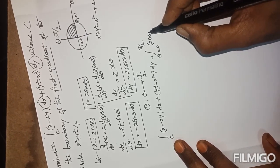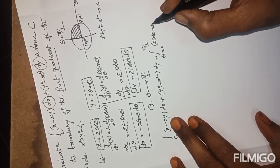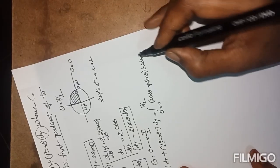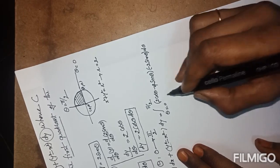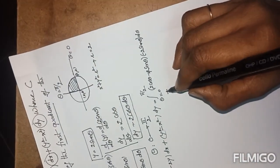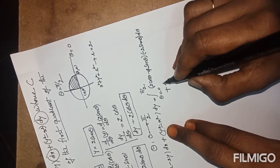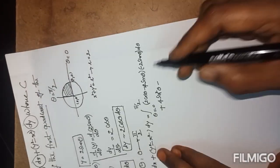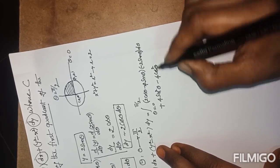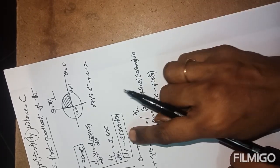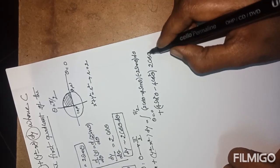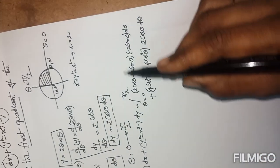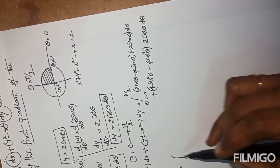Substituting: x is 2 cos theta, 2y is 4 sin theta, dx is minus 2 sin theta dθ; y² is 4 sin² theta, x² is 4 cos² theta, dy is 2 cos theta dθ. Now everything is defined in terms of theta, so we perform ordinary multiplication and then integrate from 0 to π/2.